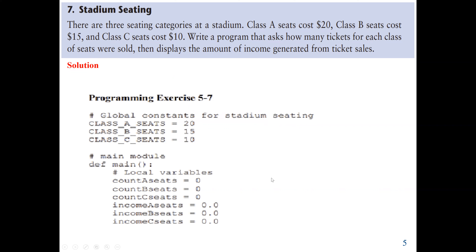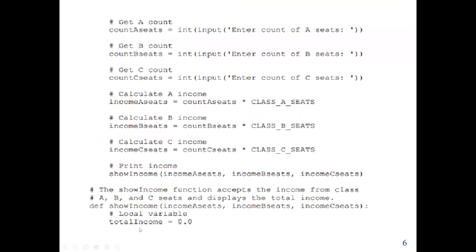We don't have to create a user-defined function — we can just get our input and do our process. Our process here will be to calculate the amount of income generated from the ticket sales. The input will be the number of Class A, B, and C tickets sold. The costs are fixed. So if 10 tickets are sold for Class C it's 10 times 10, and 20 tickets for Class B it's 20 times 15. But here we want to use a user-defined function — showIncome — to print the result for the total income generated.